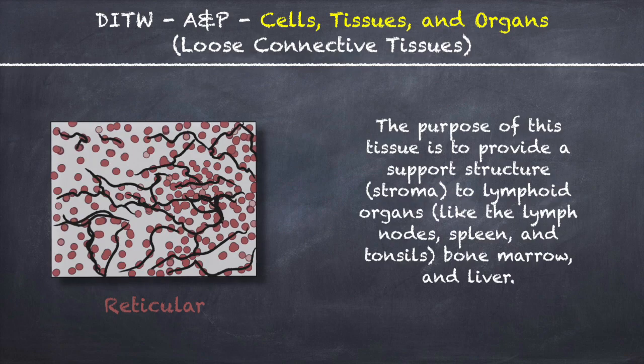The purpose of reticular tissue is to provide a support structure, or stroma, to lymphoid organs like the lymph nodes, spleen, and tonsils, as well as bone marrow and liver.